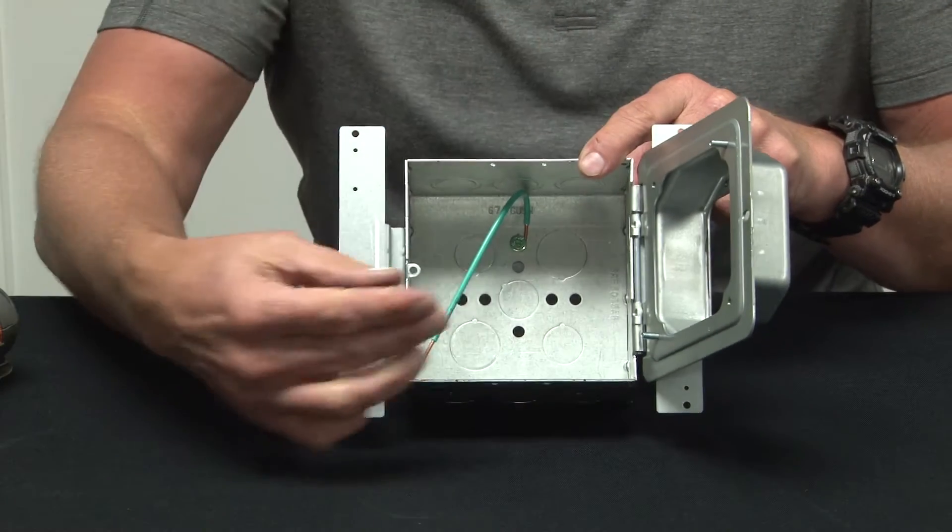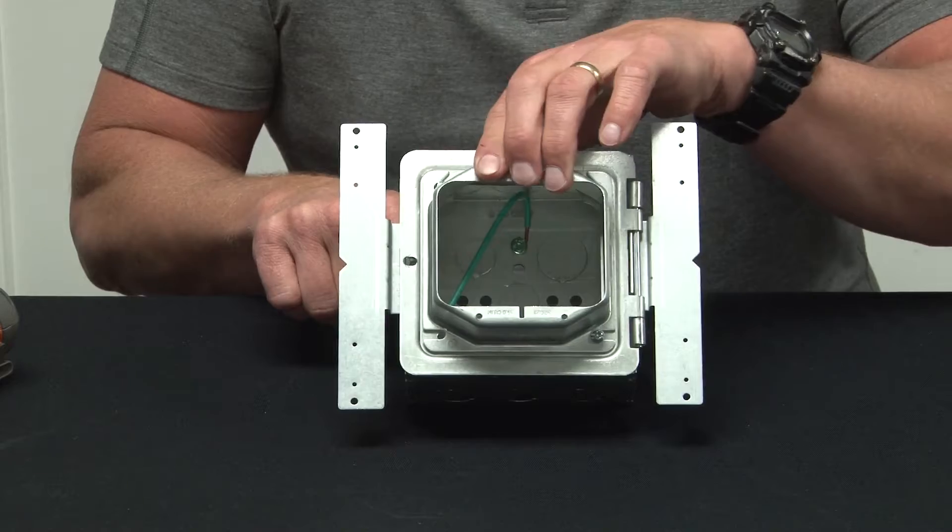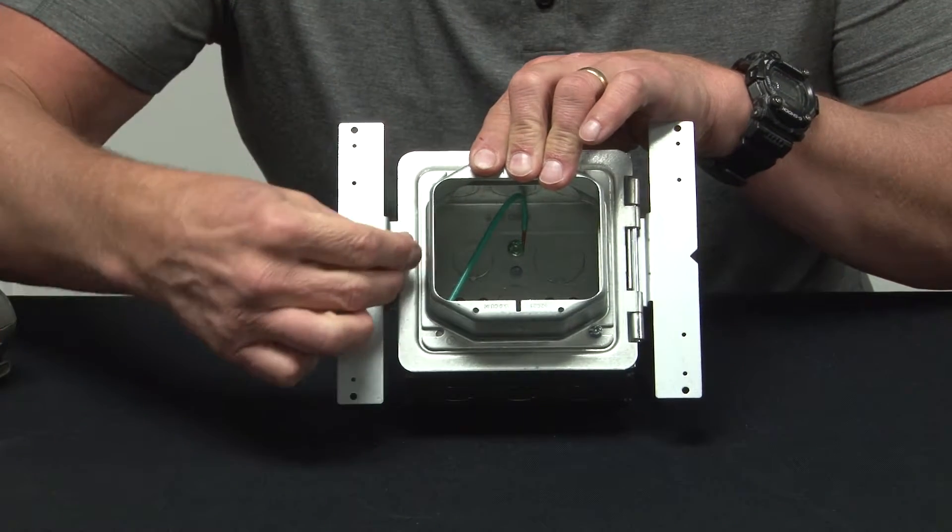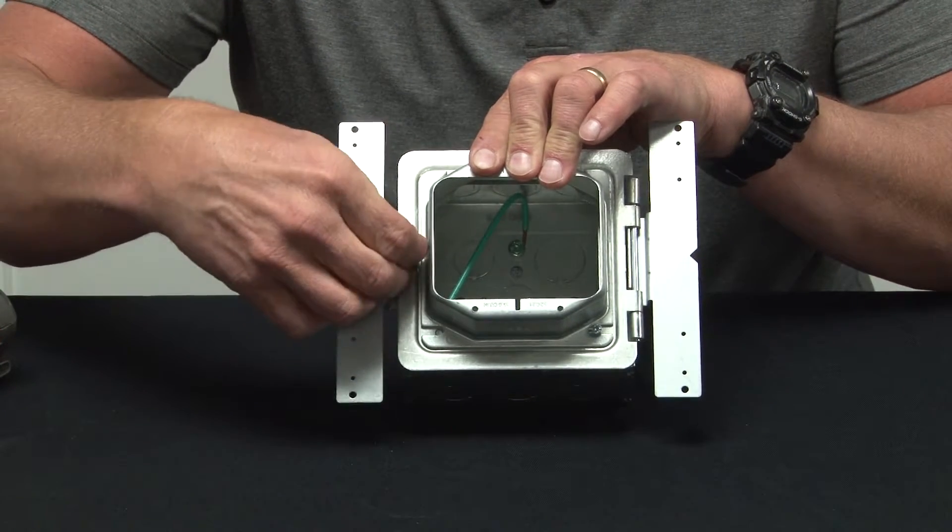You simply drop in the conduit, terminate the wires and when you're done, close it up, install the pre-installed set screw.